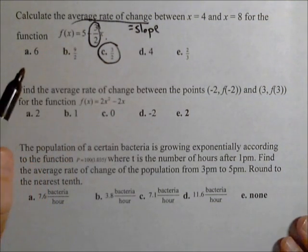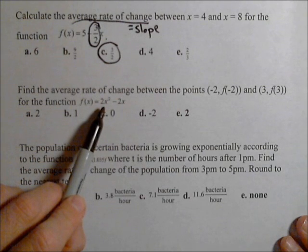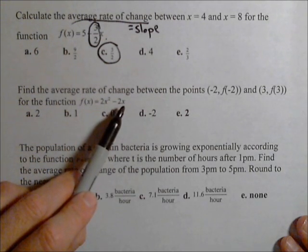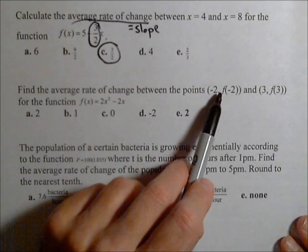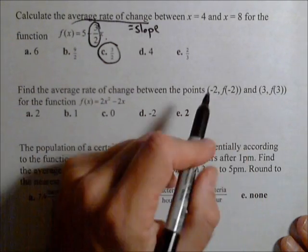And it's not always so easy. In this one, we don't have a linear function. We have f(x) = 2x² - 2x for our function, and we want the slope between the points (-2, f(-2)) and (3, f(3)).